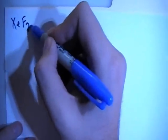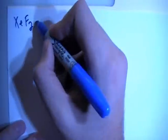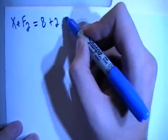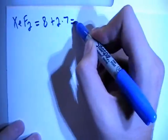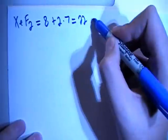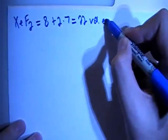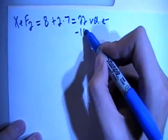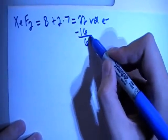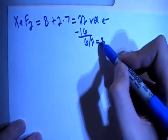Xenon difluoride, XeF2, is going to give us 8 valence electrons from the xenon plus 2 fluorines each with 7 valence electrons, giving us a total of 22 valence electrons. Subtract out the largest multiple of 8, giving us 6 remaining electrons, divide that by 2 gives you 3 pairs.